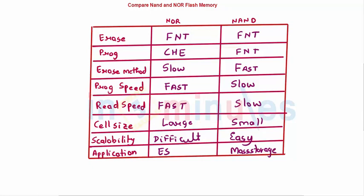The reading speed: NOR is faster compared to NAND. The cell size, if you have seen the diagram which we had drawn while understanding this—in NOR, it's going to be large; in NAND, it's going to be small.